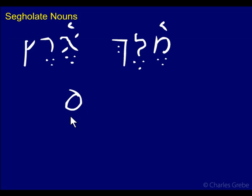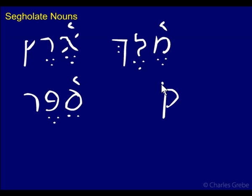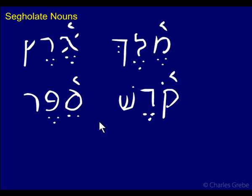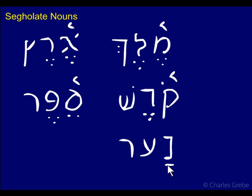What about sefer? Stress on the first syllable and a segol in the second — that's a segolate noun. How about kodesh? Stress in the first syllable and a segol here. Here we have a holam and a tsade. As long as we have a segol in the second position. So: earth, king, book, holy or holiness. And what about na'ar, which means young lad? Here we have a guttural. Na'ar is spelled with two patachs and stress in the first syllable, so it also is a segolate.